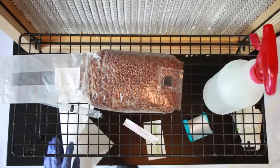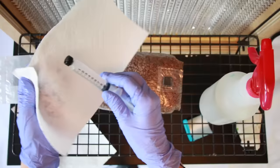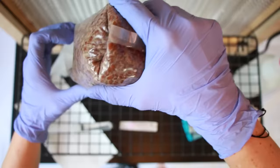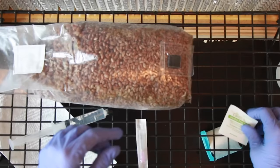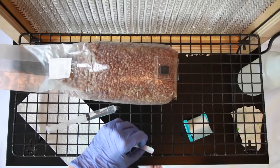First, we need to prepare our spawn bag. Look over the spawn bag for any damages, holes, or contamination. Then spray and wipe down the syringe and the bag with 70% isopropyl. Next, we want to give the bag a quick mix because we do need to let in a little bit of fresh air so the spores can germinate. Then wipe down the black injection port with an alcohol pad.